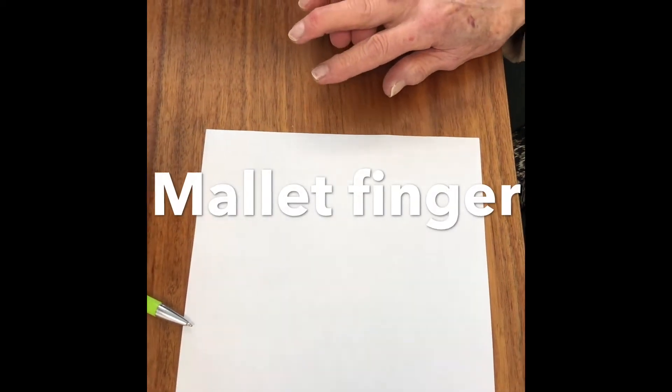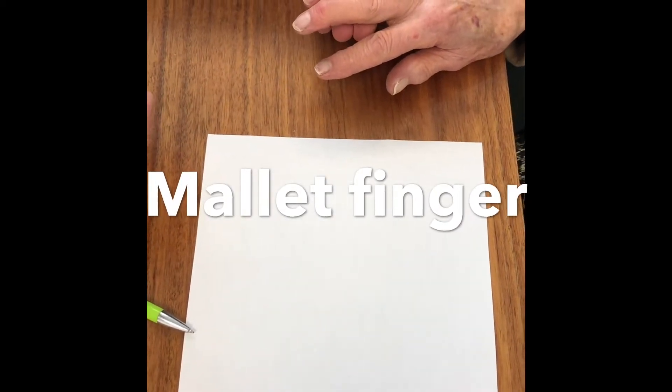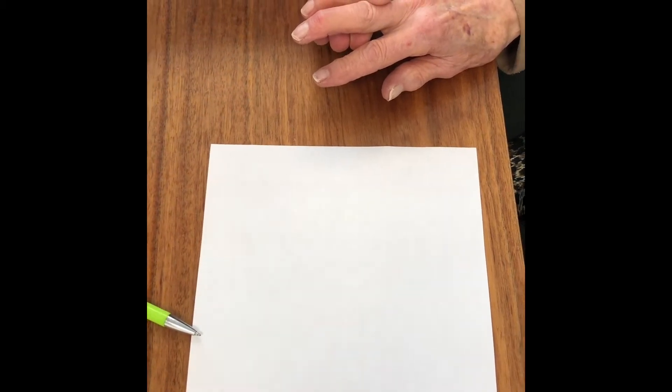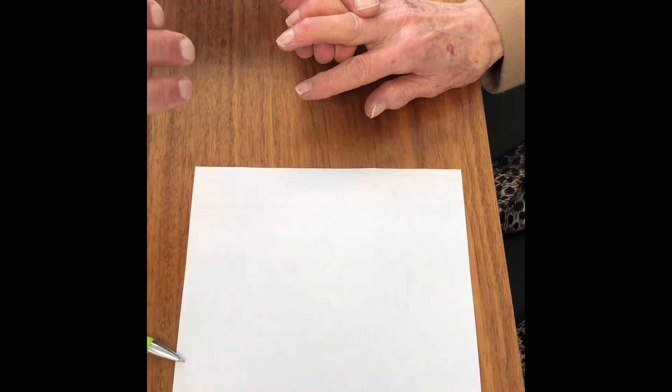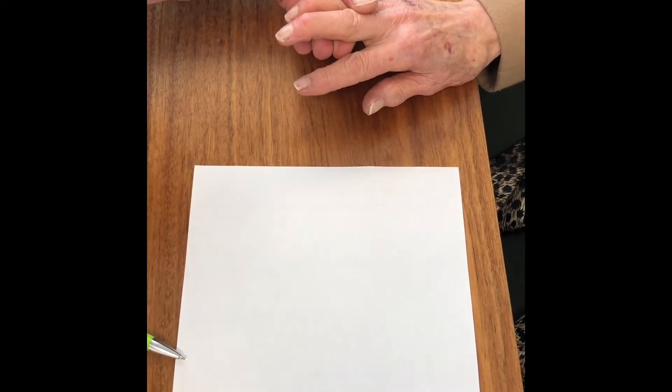Okay, so this is the hand of a 77-year-old lady who unfortunately three weeks ago sustained a forced flexion injury to the right middle and ring finger.